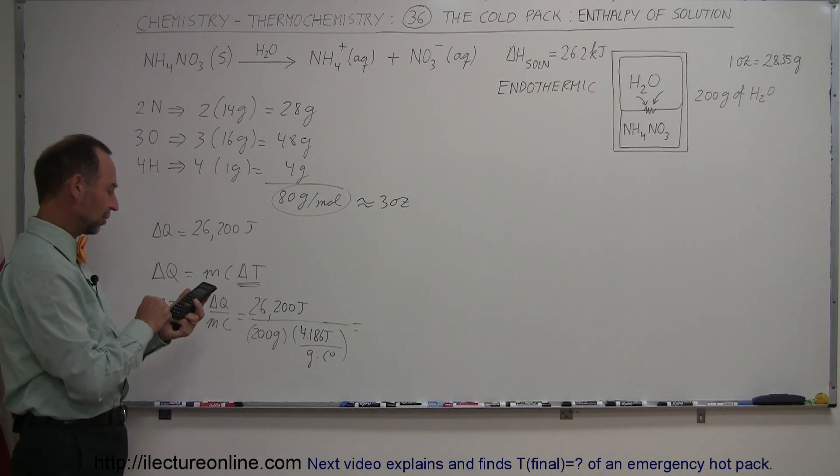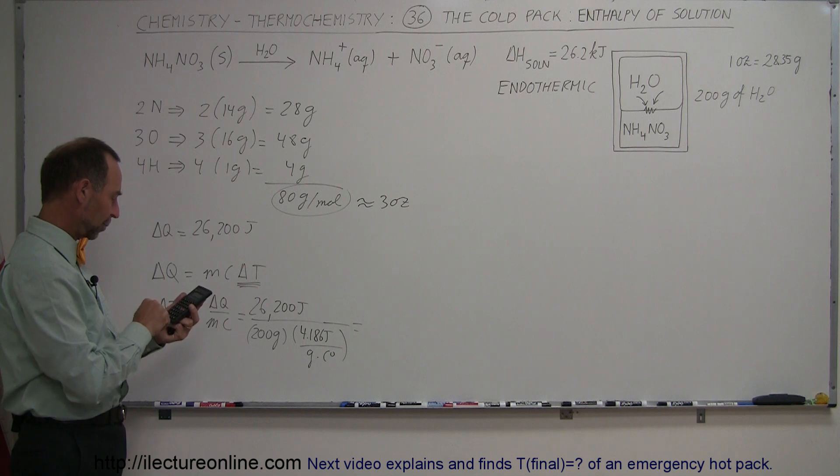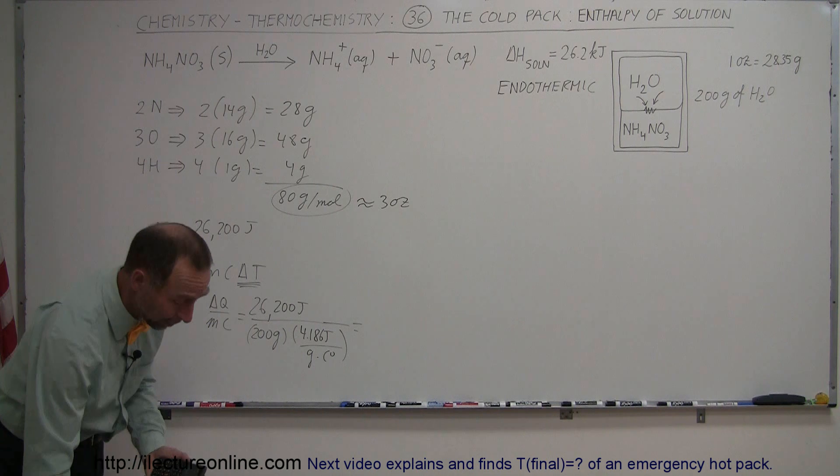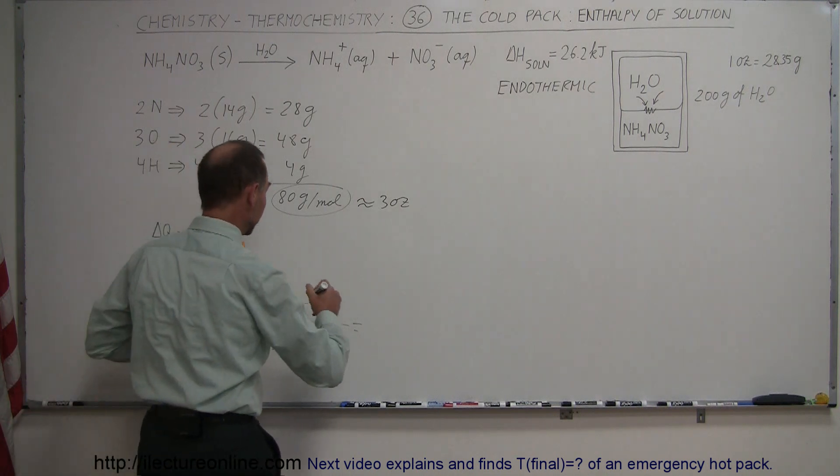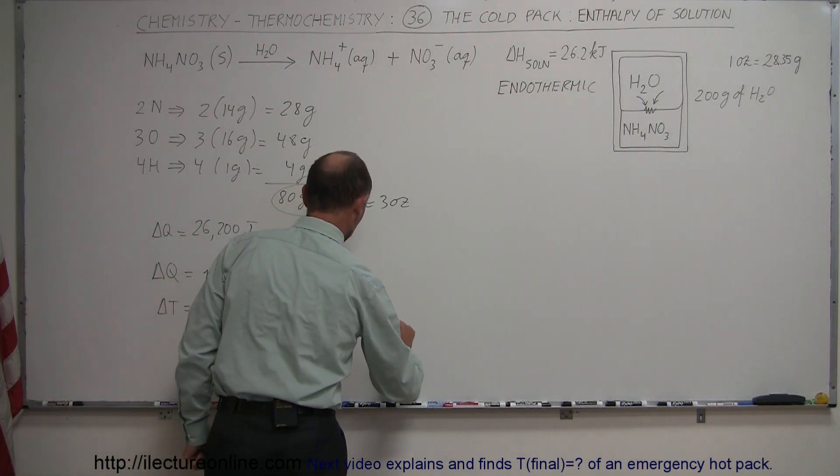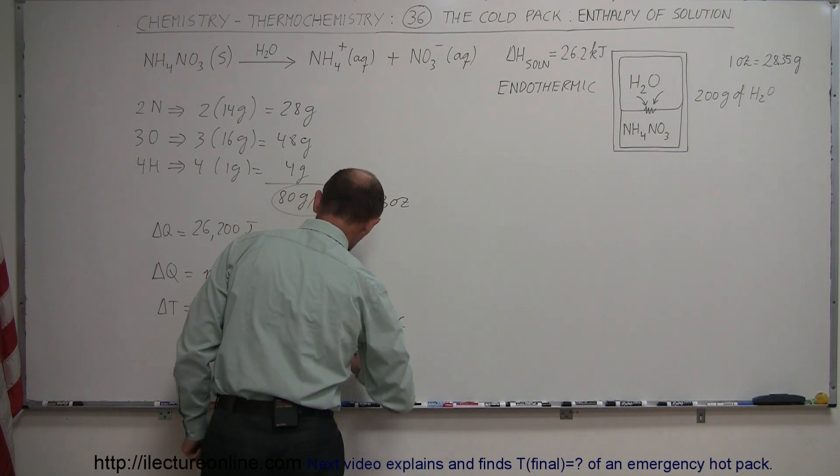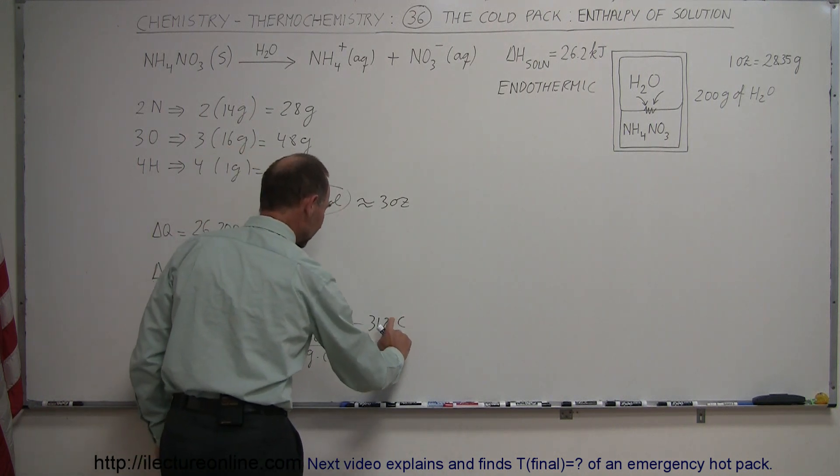And when we do all that, we get centigrade degrees as a final unit. So let's figure it out. We have 26,200 divided by 200 divided by 4.186 equals, wow, 31 degrees. That's quite a bit. So this is equal to 31.2 degrees centigrade, or I should really say centigrade degrees because it's not the actual temperature.